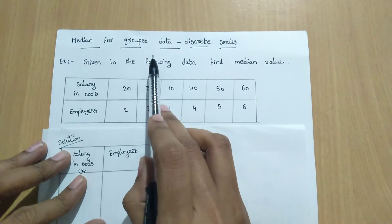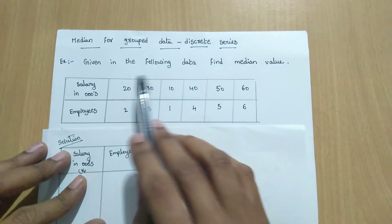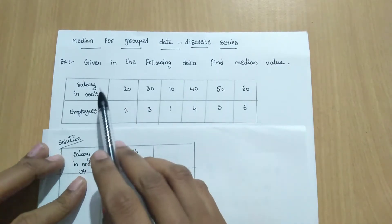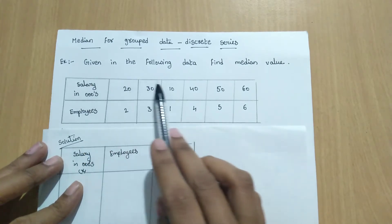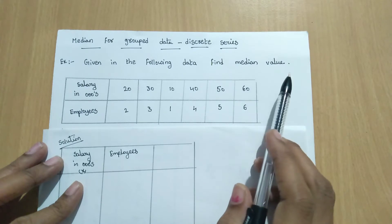Median for grouped data discrete series. That means median for discrete data. So here example problem 1 median for discrete series. Given in the following data find median value.